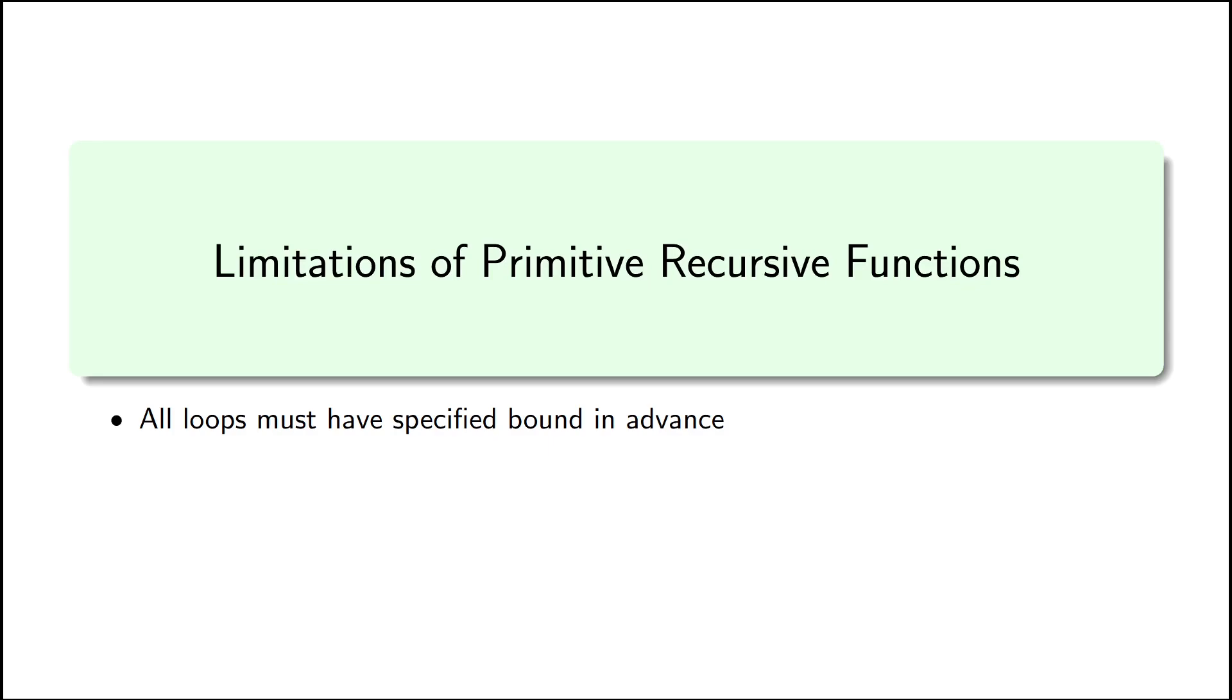When we start the loop, we need to have some value in mind for a maximum number of times we're going to go around the loop, whether that loop is an actual for loop in our code, or a loop caused by subroutines calling themselves recursively.